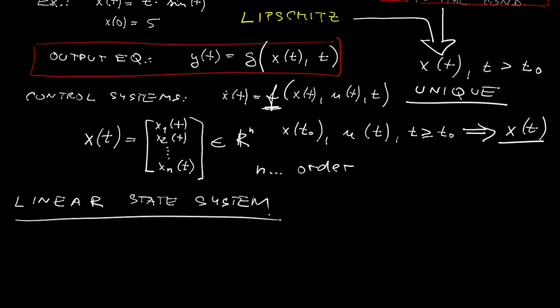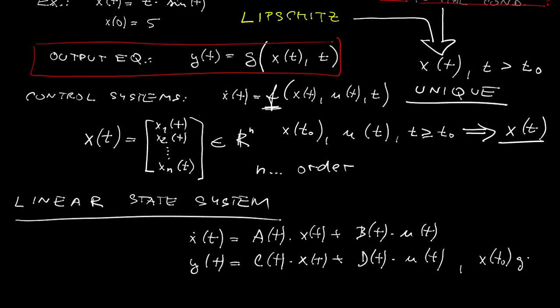For which the state and output equations look like this: x dot is equal to A, in general A can vary in time, times x plus B times u. And y of t is C times x and D times u. Of course as usual x at t0 is given.